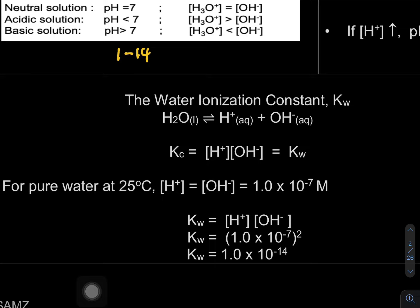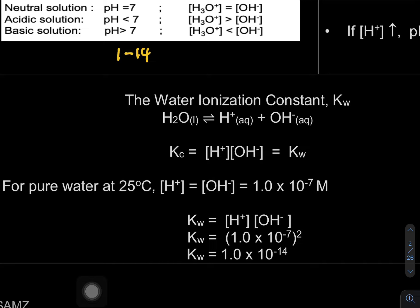Now the water ionization constant Kw. Water H₂O can dissociate to form H⁺ and OH⁻. If you remember from Chapter 6, Kc equals concentration of products over reactants, but Kc only accounts for aqueous and gas species. Since H₂O is liquid, it is not included, so Kc considers only H⁺ and OH⁻, which we denote as Kw.